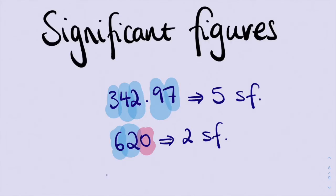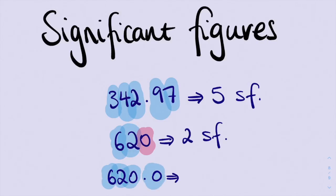However, if I had the number 620.0, we have 1, 2, 3, 4 significant figures, all because of that little decimal place. That decimal place tells us that the 0 after it is very important, so we have to include it. So we have 4 significant figures.